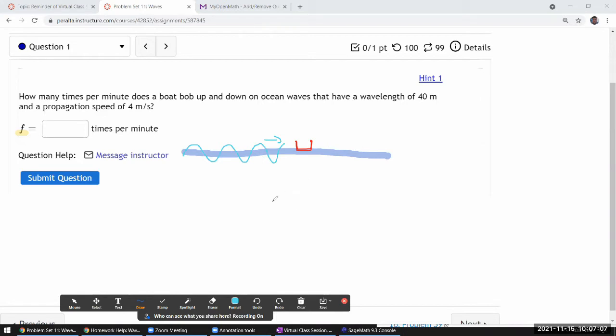And we are being told the parameters of this wave. We are being told that it has a wavelength of 40 meters and the propagation speed of 4 meters per second.